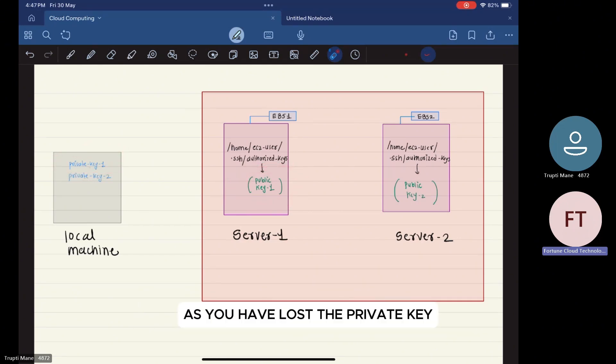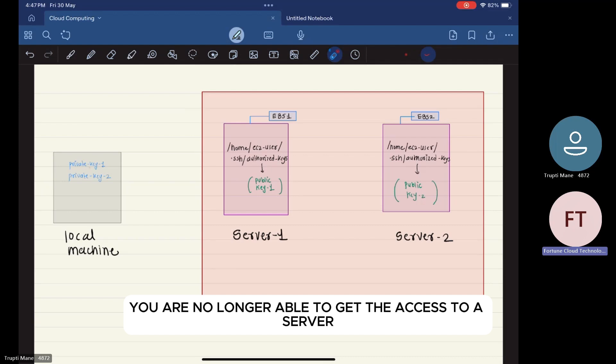As they have lost the private key, you are no longer able to get the access to a server. To solve this, we need to somehow replace this public key with the key whose private key is present on a local machine.